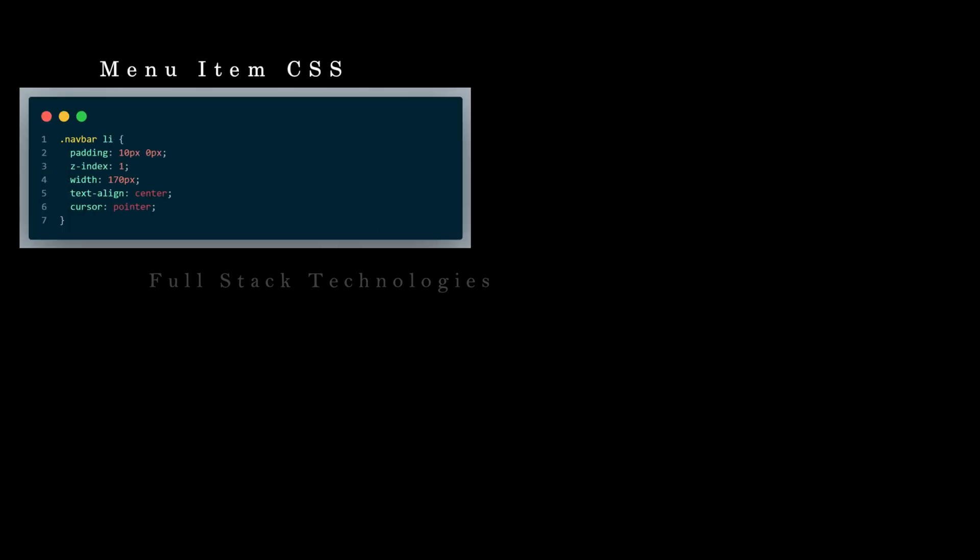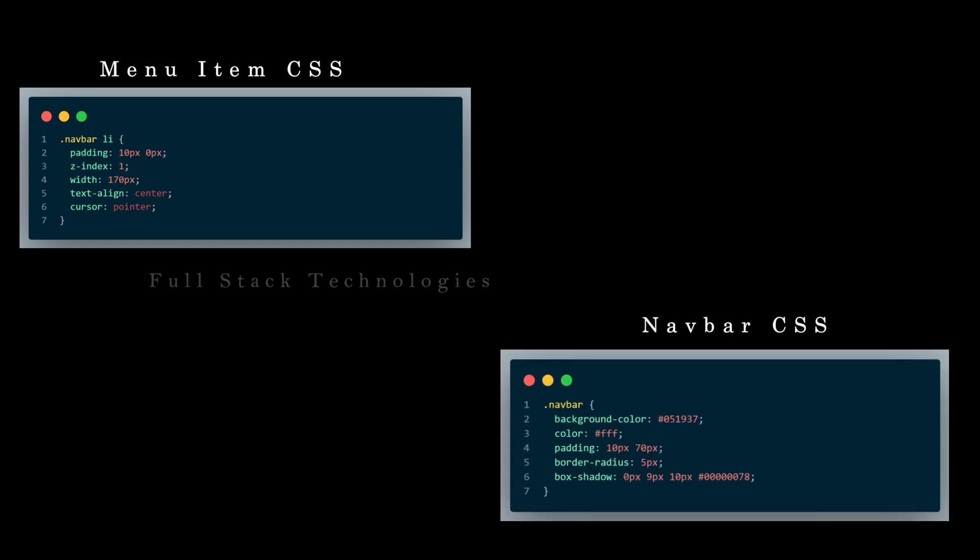Set the padding, width and z-index properties to the list element and align its text to the center. Set the background color, padding, and border radius to the navbar, and set padding space around the navbar elements.